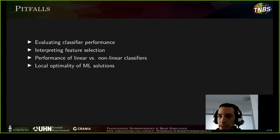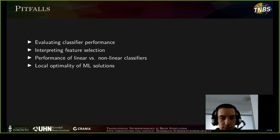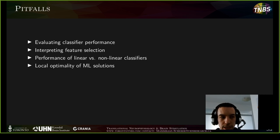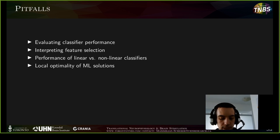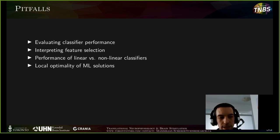If you've found an optimal feature set and optimal hyperparameters, keep in mind that you likely didn't find the global optimum — you probably discovered a locally optimal solution. But that's not something to be super concerned about. If your locally optimal solution gives you 99% classification accuracy, there's no point searching for the global maximum. Just go with the local one, but always keep in mind there might be a better combination out there.